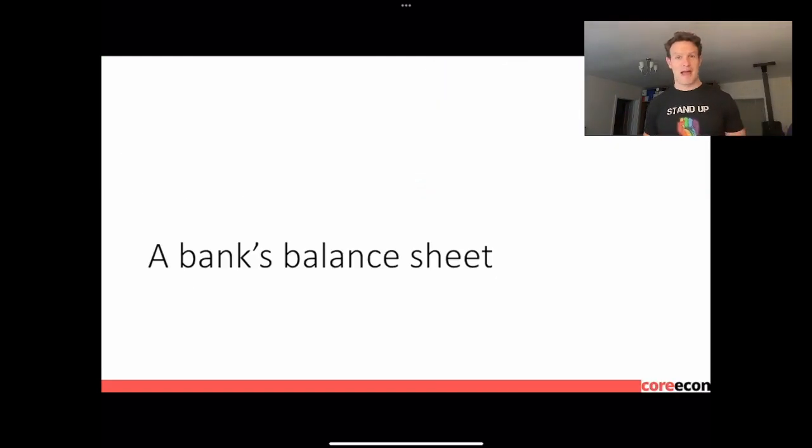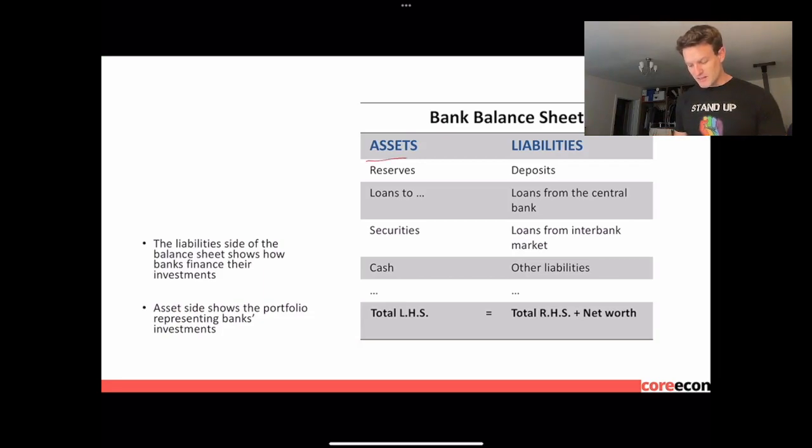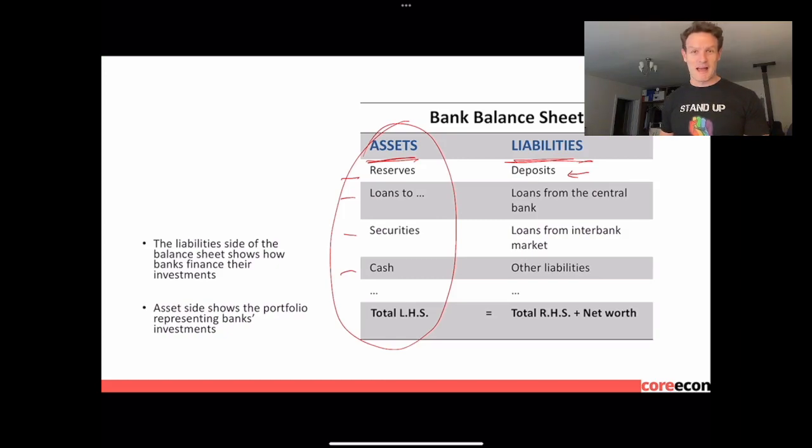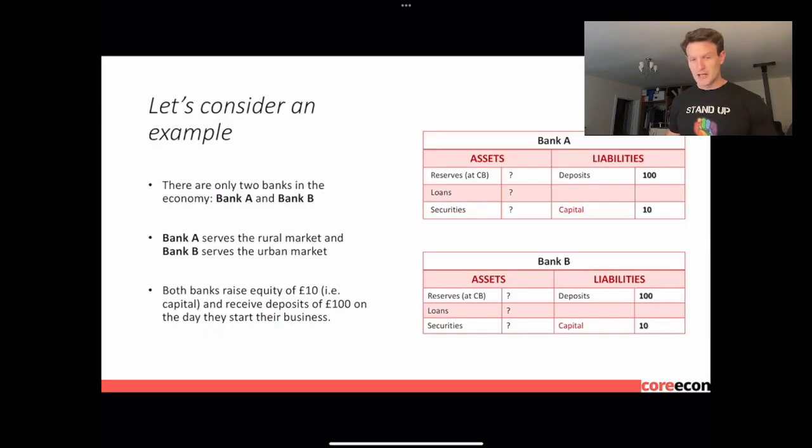Now, how do we think about that in terms of banks? We've got the bank's assets, and we've got the bank's liabilities. The assets for a bank are its reserves, its loans to others, the securities that it might have, so those are stocks and bonds and these kinds of things, the cash that it has on hand. So those are its total assets. And then its liabilities are the deposits, because other people can take those out, loans from the central bank that it has to repay, loans from the interbank market, other liabilities that it might have.